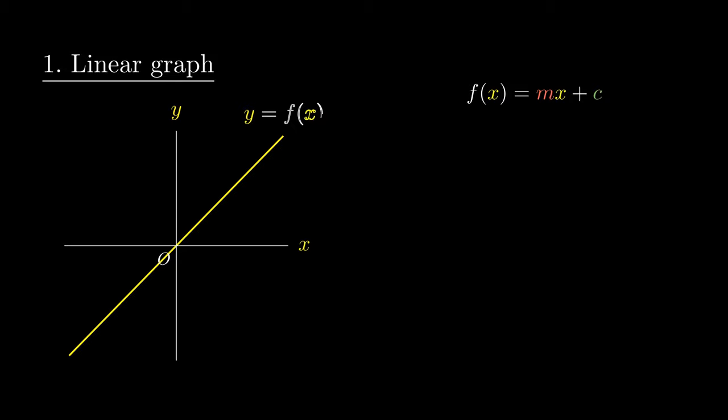In this particular straight line, m represents the number 1, and c represents the number 0.